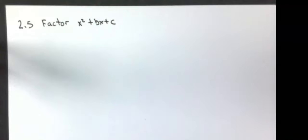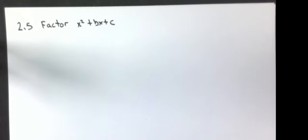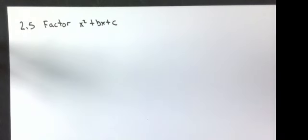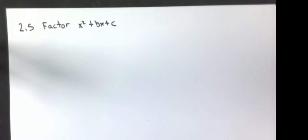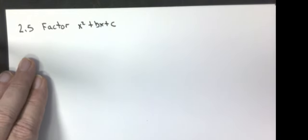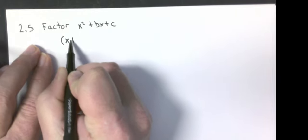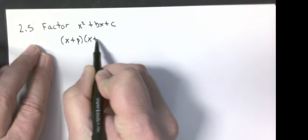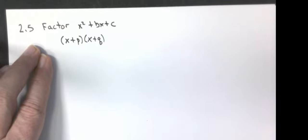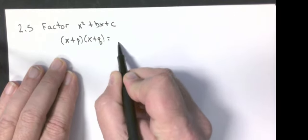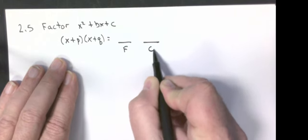Our next section is we are going to turn quadratic equations that are in standard form into what we call factored form, which we already learned how to solve in the previous lessons. To figure out where this is coming from, if I have two binomials, we taught you how to multiply those together. One of the methods I taught you was FOIL.